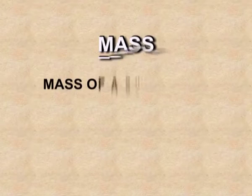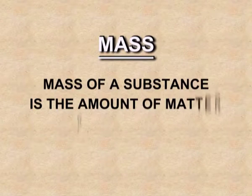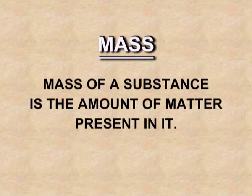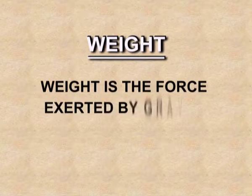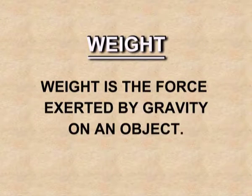Mass and weight — these two things are altogether different. Mass is the amount of matter contained in a body or substance. Weight is the force exerted by gravity on an object. Mass for a substance is constant, and we can measure it using an analytical balance. Gravity varies from place to place, and for measuring weight we use a spring balance.